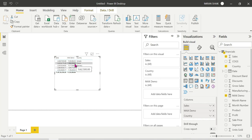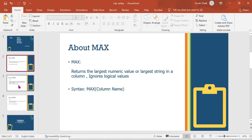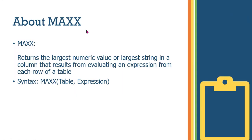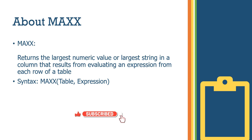The maximum sales amount is found using MAX. The next function is MAXX. If you choose MAXX, it is an iterator function — similar to SUMX, COUNTX, AVERAGEX. The X suffix means it is an iterator function that evaluates each and every row, returning the largest numeric or largest string value resulting from evaluating an expression for each row of a table.